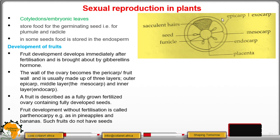The fruit wall is called the pericarp and is made of three layers: the epicarp (also known as the exocarp), the middle mesocarp, and the inner endocarp, which is juicy or succulent. Inside the endocarp are succulent hairs, and surrounding the placenta are the seeds.